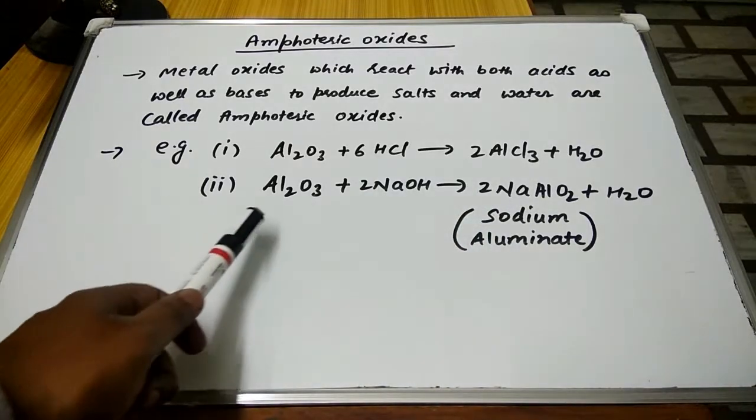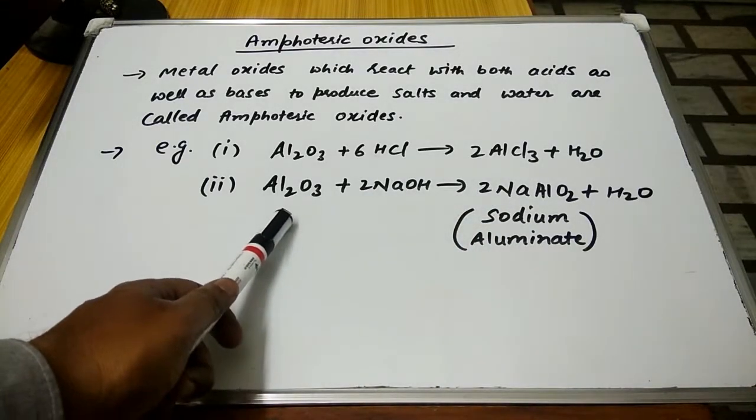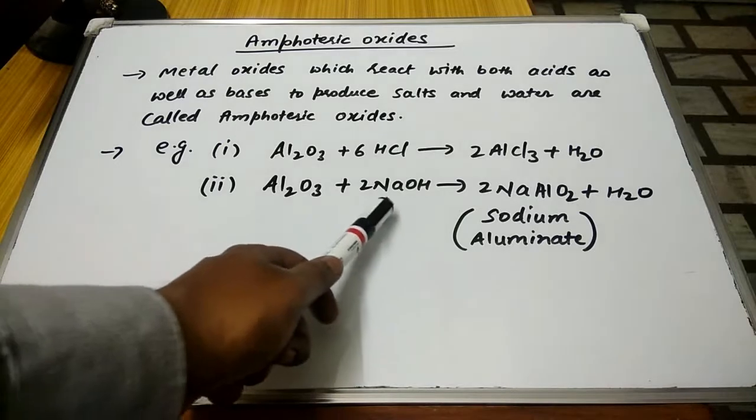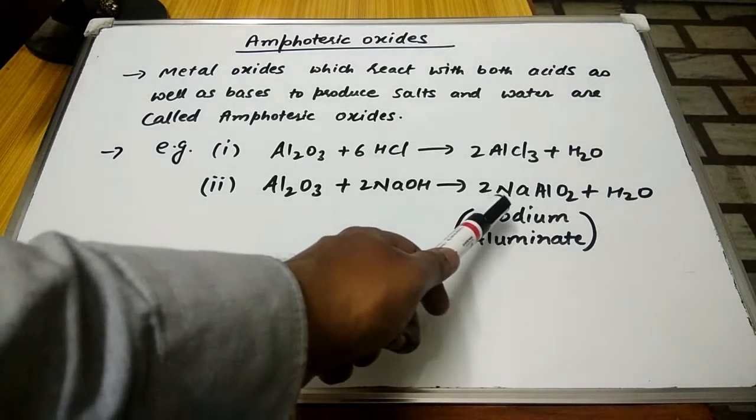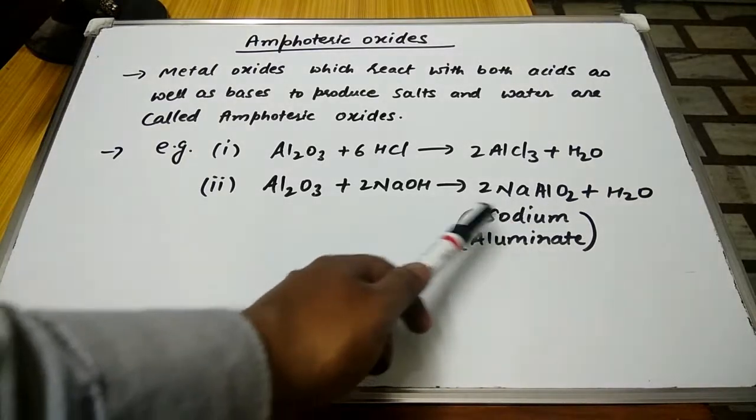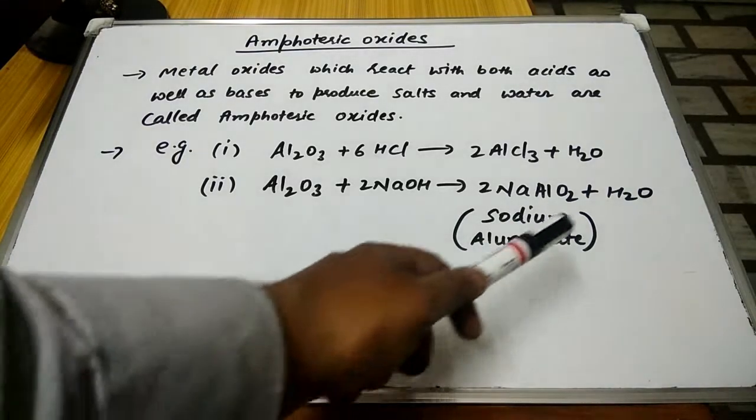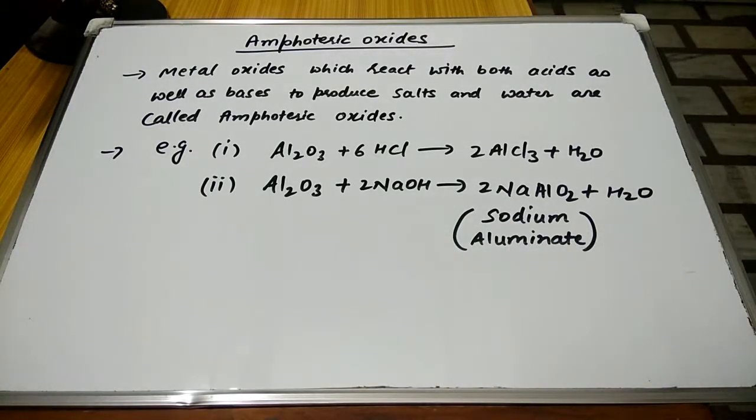plus water. And when it reacts with NaOH (that is, base), it gives NaAlO2, which is sodium aluminate, plus water. So it has the capacity to react with acid as well as base to form respective salts. Therefore, it will be considered as an amphoteric oxide.